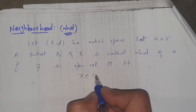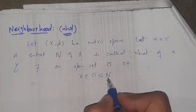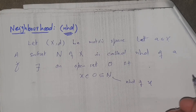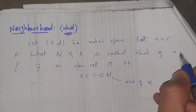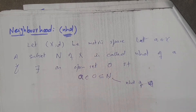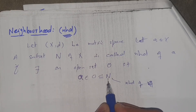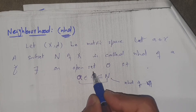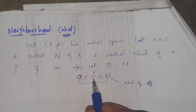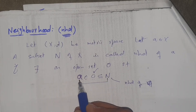...a belongs to O and O is contained in N. Then N is called a neighborhood of element a. This means there is an open set between the element and the set — there exists an open set O such that the element belongs to the open set and the open set is contained in the set N. Then this set N is called the neighborhood of that element.